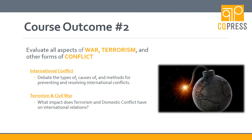Course outcome number two: evaluating all aspects of war, terrorism, and other forms of conflict. Students often need to use the theories they've learned to distinguish the causes of war, compare just wars and wars of aggression, discuss the formation, maintenance, and importance of international alliances, and critique efforts on the spread of nuclear weapons. For terrorism and domestic conflict, students are often asked to outline common factors in the development and resolution of civil war, critique common definitions of terrorism and their causes and prevention strategies, and discuss the role of the United Nations and international law in responding to both.